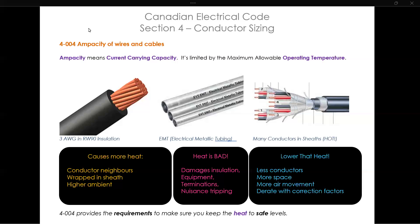If it carries that 115 amps continuously, the insulation temperature will never exceed 90°C. So to summarize: a 3-gauge copper RW90 conductor installed in an EMT raceway has an ampacity of 115 amps per Table 2. That means two things — the ambient temperature is less than or equal to 30°C, and you can run it at 115 amps continuously while the insulation temperature remains within the 90°C limit.